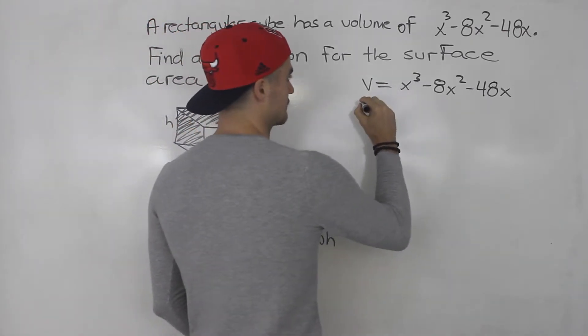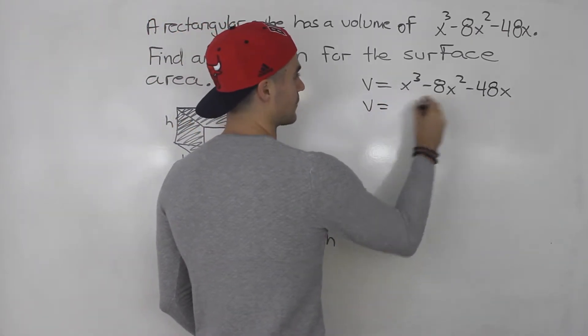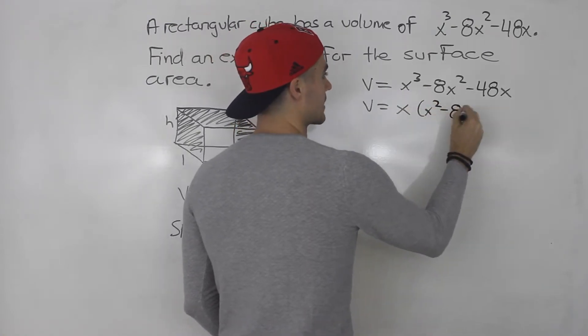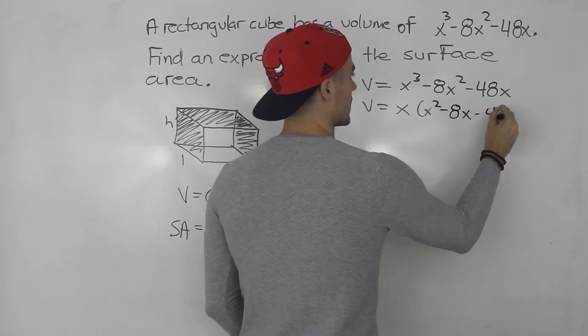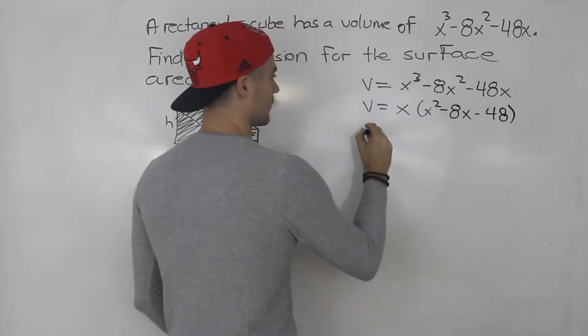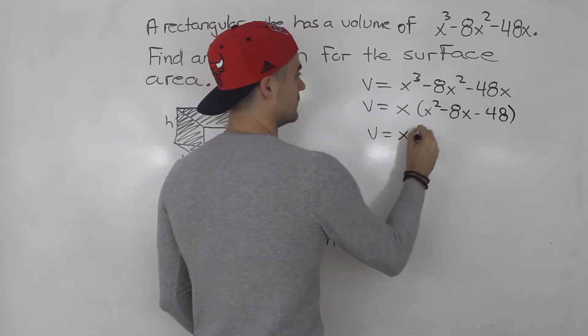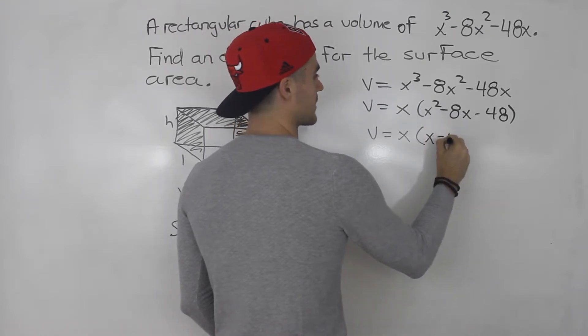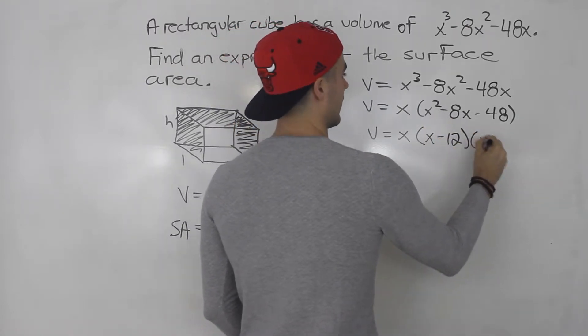So taking this and factoring it, notice how we could take an x out of everything. We'd be left with x squared minus 8x minus 48. And then this here, this remaining bracket, that could factor into x minus 12 times x plus 4.